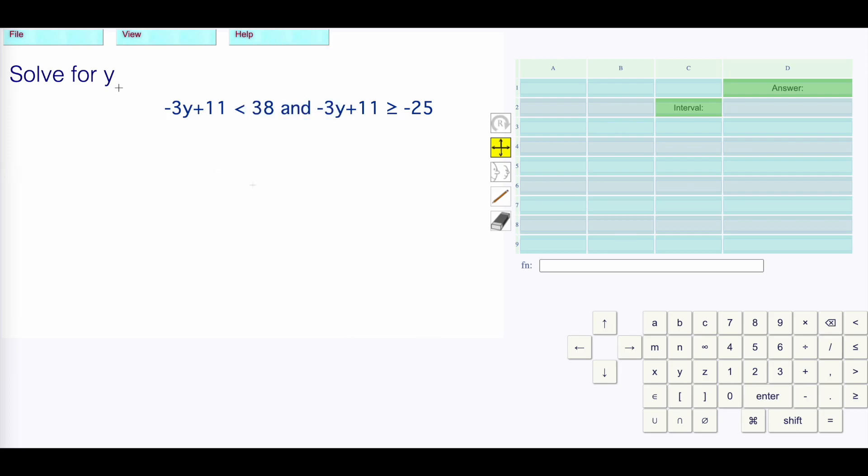Alright, here we are on a level 14 type question. We have -3y+11 < 38 and -3y+11 ≥ -25. I'm going to solve these as inequalities.